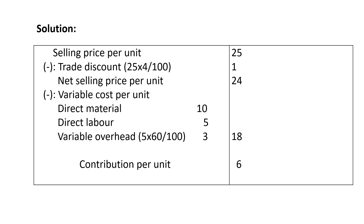Solution. Selling price per unit is 25 rupees less trade discount 4% on selling price. Calculate 4% on 25 rupees, then we get 1 rupee. Deduct 1 rupee from 25 rupees, giving 24 rupees net selling price per unit. From this, deduct variable cost per unit: direct material 10 rupees, direct labor 5 rupees, variable overhead 60% on direct labor — 60% on 5 rupees equals 3 rupees. Total variable cost is 18 rupees. Contribution per unit is 6 rupees.